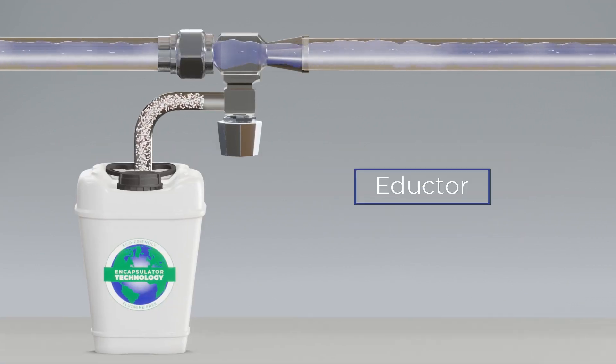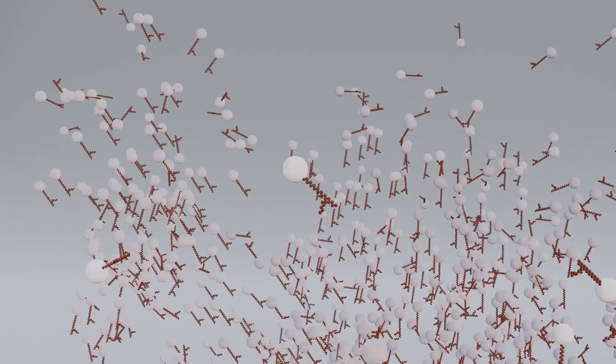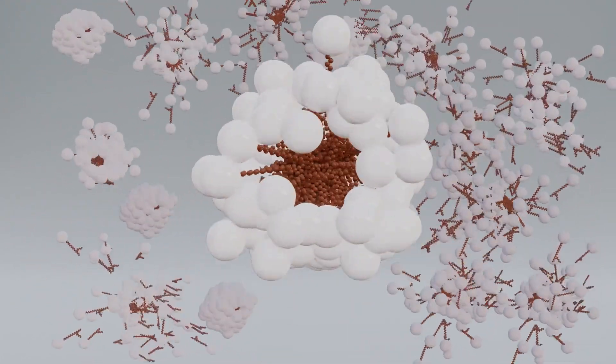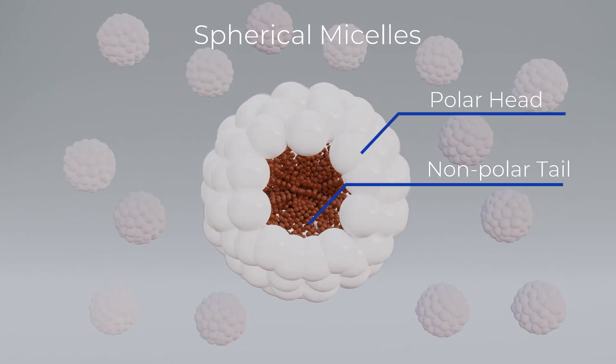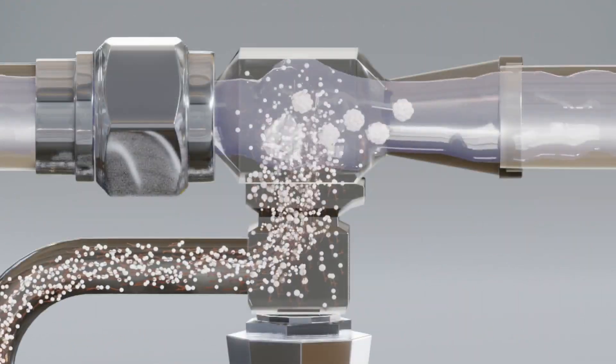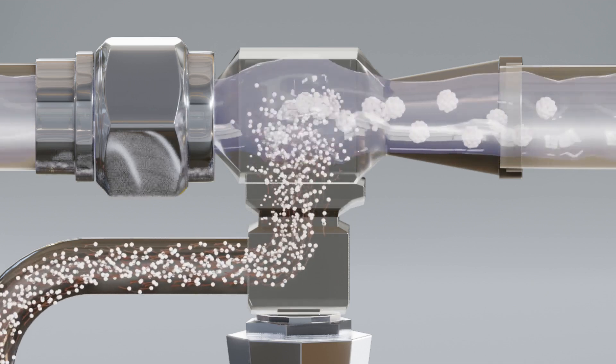Once the EA molecules enter the water they instantaneously and automatically orient with the non-polar tails inward and the polar heads outward forming millions of spherical micelles.